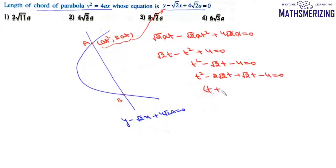Factoring gives us (t + √2)(t - 2√2) = 0. So t = -√2 or t = 2√2.